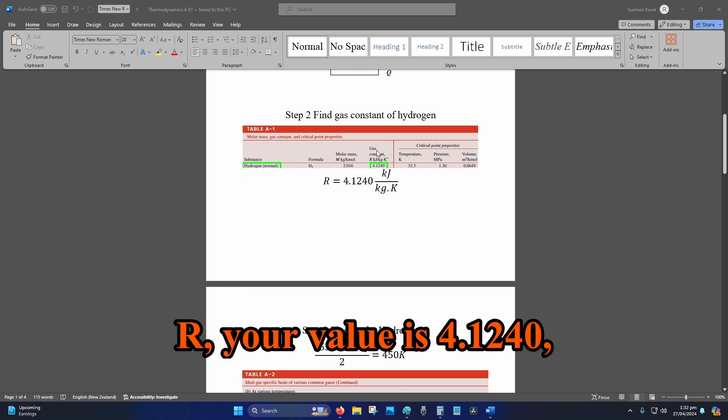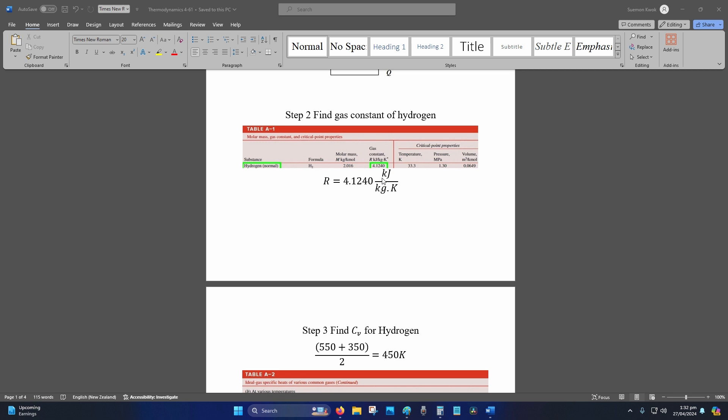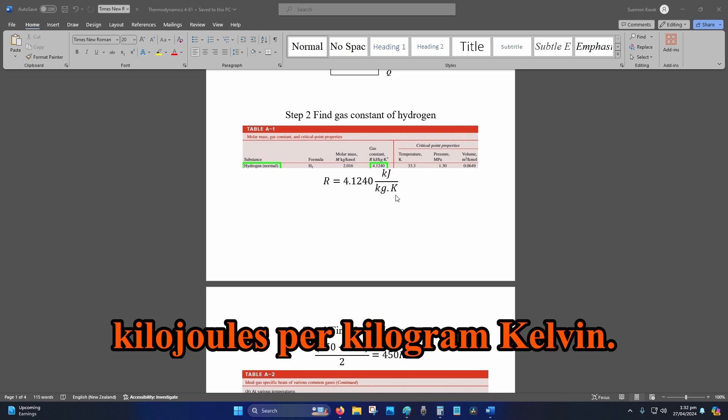Go to your gas constant, R. Your value is 4.1240 kJ per kilogram Kelvin.